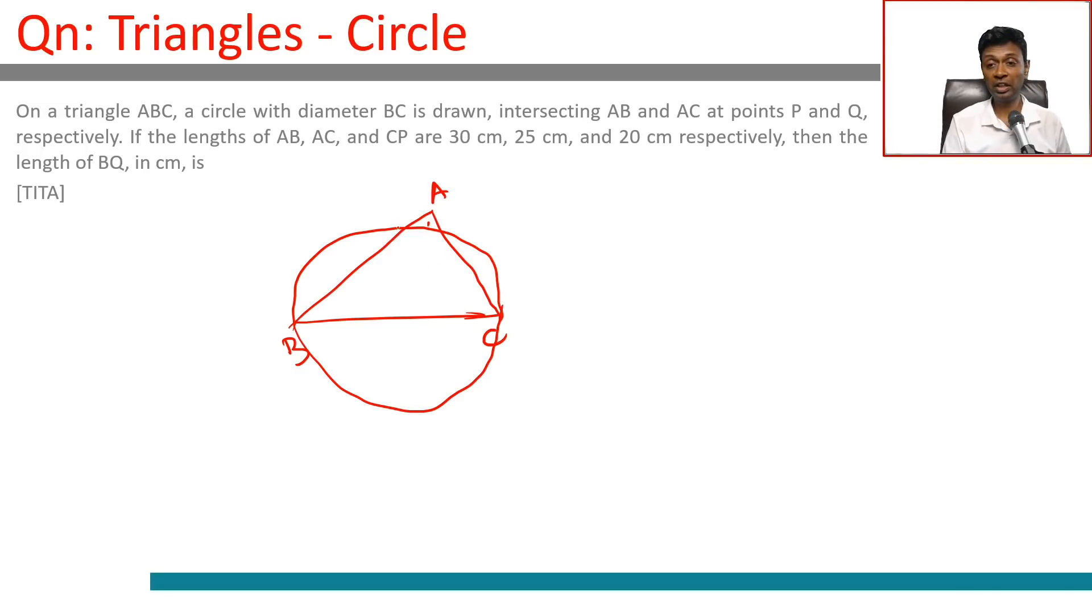Then intersecting AB and AC at points P and Q respectively. This is P. This is Q. AB, AC, and CP. AB is 30. AC is 25. CP is 20.